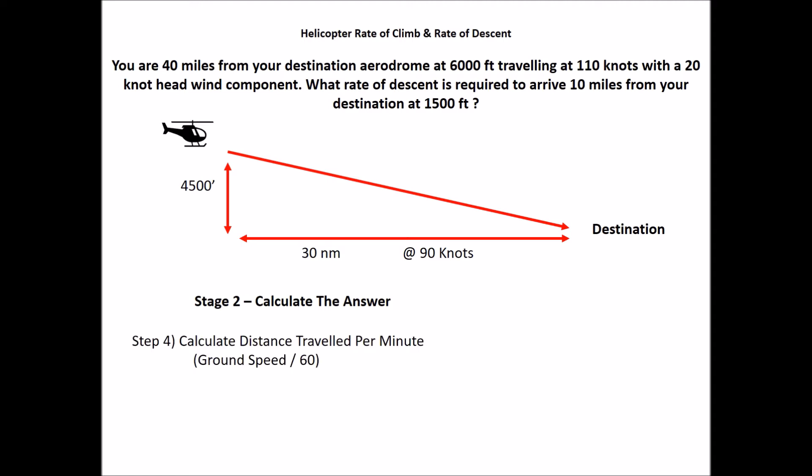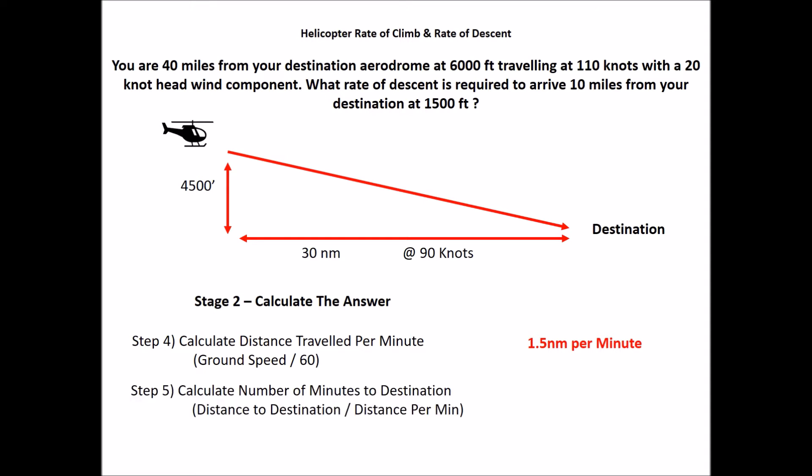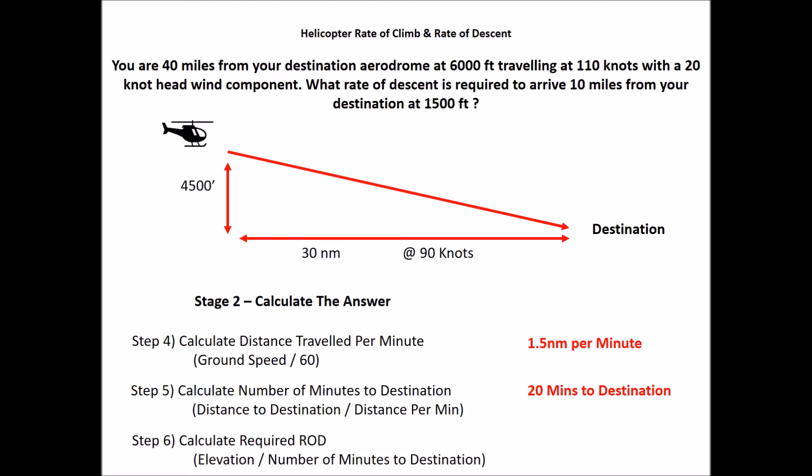Stage two, calculate the answer. Step four, distance travelled per minute: 90 knots divided by 60 gives 1.5 nautical miles per minute. Step five, number of minutes to destination: 30 nautical miles divided by 1.5 gives 20 minutes. Step six, required rate of descent: 4500 feet divided by 20 minutes gives a descent required of 225 feet per minute.